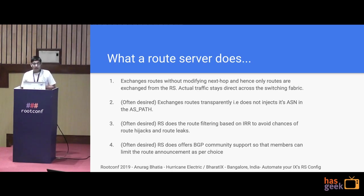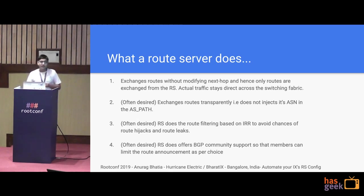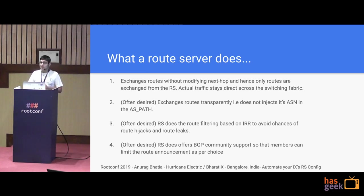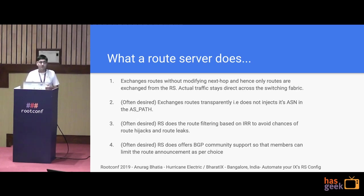Another often desired feature is that route servers should do filtering based on IRR. If you're not sure about IRR, you can check out my yesterday's talk on routing security which covers it in detail. It is desired that route servers do filtering based on route objects and AS sets. As a last feature, it is often desired that route servers offer BGP communities where members can control route announcements — especially important for large content players who are worried about their routes being announced beyond a certain point.